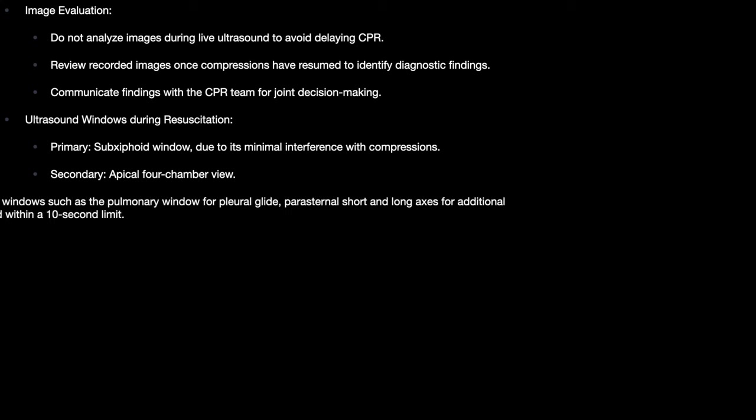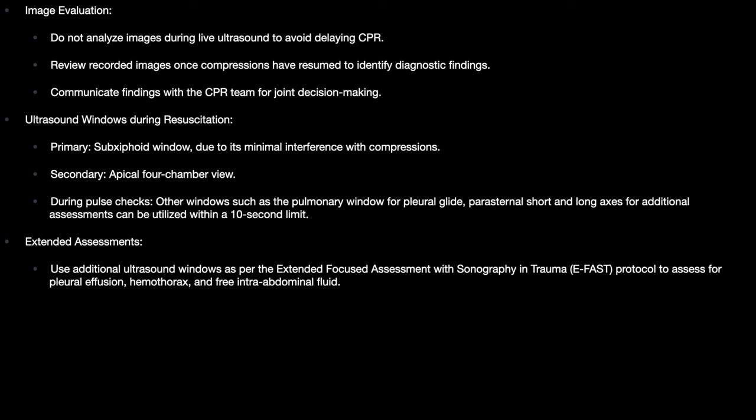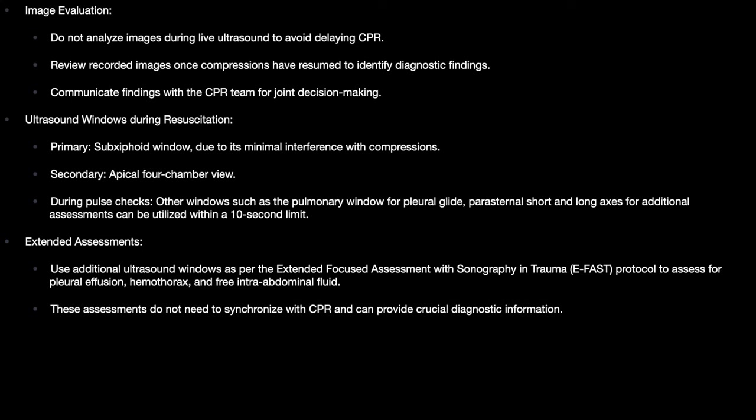The primary ultrasound window to use during resuscitation is the subcostal view, as it minimizes interruption to compressions. The secondary window is the apical four-chamber view. During the pulse check, other windows such as the pulmonary window for pleural assessment and parasternal short and long axis can be utilized within the 10-second limit. Extended assessments like E-FAST can evaluate for pleural effusion, hemothorax, or free intra-abdominal fluid, and do not need to be synchronized with CPR.